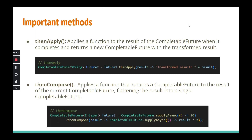We've done `thenApply` and now we're going to look at `thenCompose`. Remember the limitation with plain Future — there was no way to chain asynchronous computations: extract the result of the previous computation and chain it into the next. With `thenCompose` we can do this. Let's see how in the IDE.